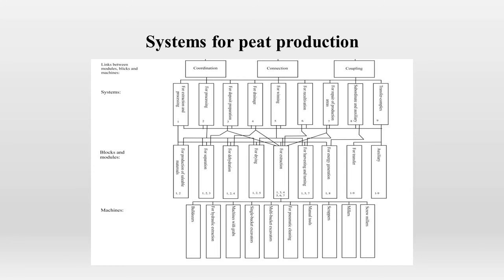Extraction and processing, processing, deposit preparation, drainage extraction, recultivation, production area repair, subordinate, and auxiliary systems, and also transfer systems. Extraction systems are used for extracting raw peat from the deposit.